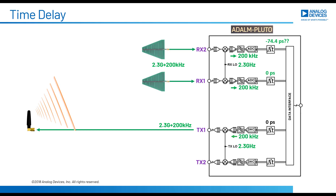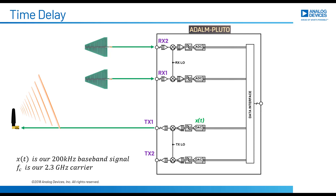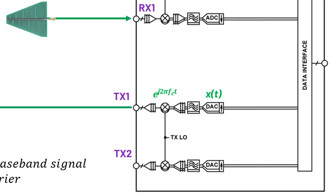Let's start putting some equations down to describe our system. First, we have a 200 kilohertz baseband signal — for us, just a complex sine wave, but generally this will be some digital comm signal or radar pulse. We give it the generic name X of T. Now we're going to upconvert that with a mixer — mathematically, this is just a complex multiplication with a natural exponential function. If that exponential term is positive, it shifts up in frequency; if it's negative, as on the receive side, we shift down. The end result is X of T multiplied by that natural exponential, giving us our 2.3 gigahertz plus 200 kilohertz waveform.